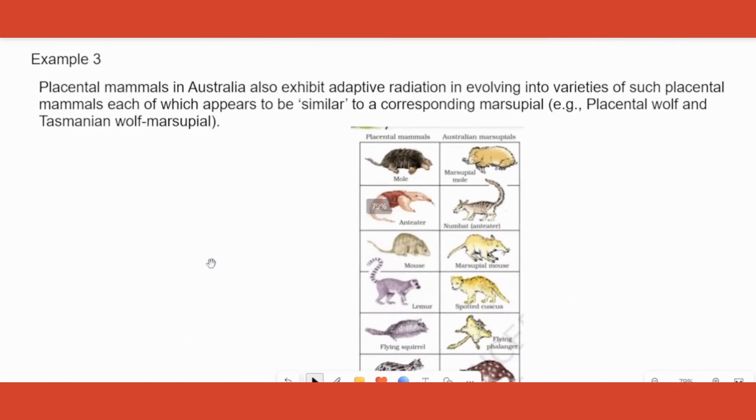Second type of evolution also happened in the Australian continent, and what is that? That is with respect to the placental mammals. The previous one was with respect to marsupial mammals, right? Here, placental mammals. What is special about placental mammals here is if you notice, for every marsupial there is a similar looking placental mammal. For every marsupial, that is their marsupial mouse, similar looking placental mammal is also found in the continent. Now read the definition: placental mammals in Australia also exhibit adaptive radiation in evolving into varieties of such mammals, each of them will look similar to corresponding marsupial. And you need to learn the example of all these, please.